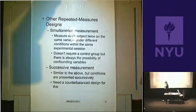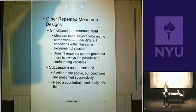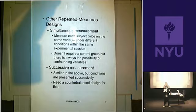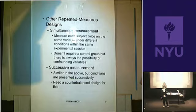One is called simultaneous measurement. Simultaneous measurement is as it sounds — you're measuring people at the same time, within the same experimental session. For example, if you're looking at whether memory is better for positive words or negative words, you might intersperse positive and negative words randomly within the same session. That is almost simultaneous, so we refer to that as simultaneous presentation — one variation of a repeated measures design.